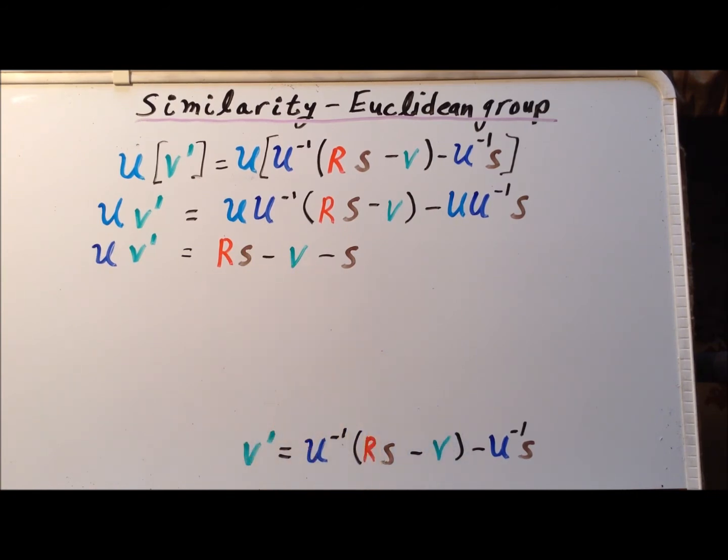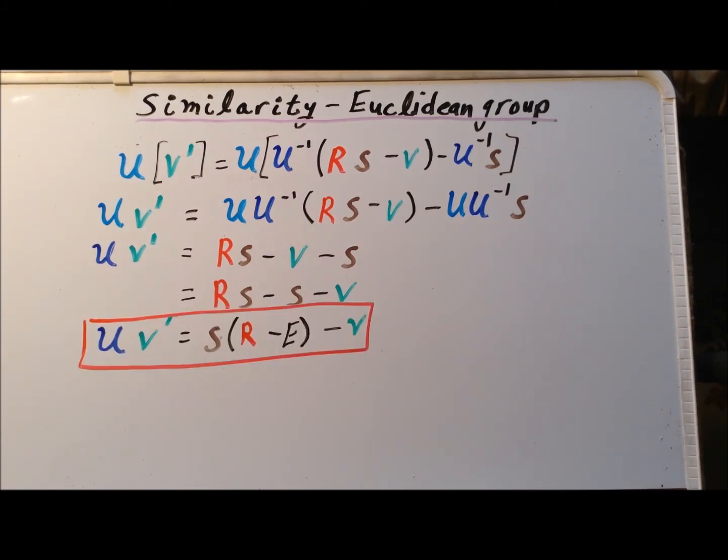Now we're going to make a minor rearrangement on the right hand side. This gives us R S minus S minus V, which suggests that we can factor out the vector S from this expression. As a result, we get the useful expression that U V prime equals S times the quantity R minus E minus V. This is a relationship between the original shift and the transformed shift, the similar shift. The usefulness of this expression will be clear somewhat later.